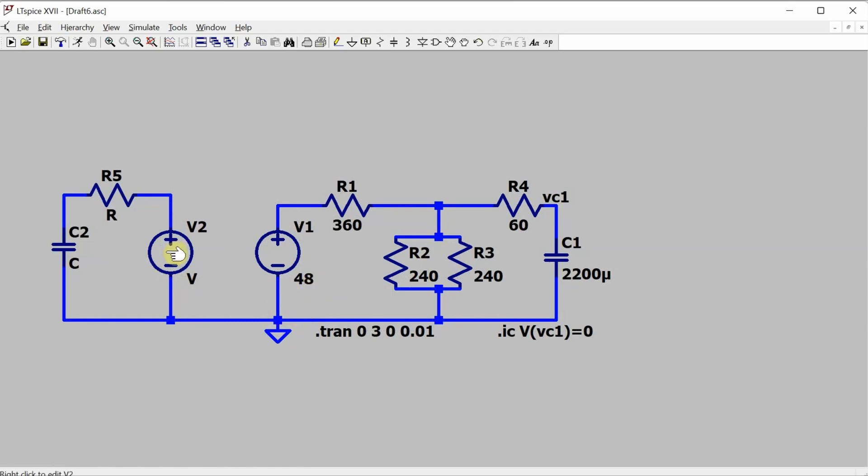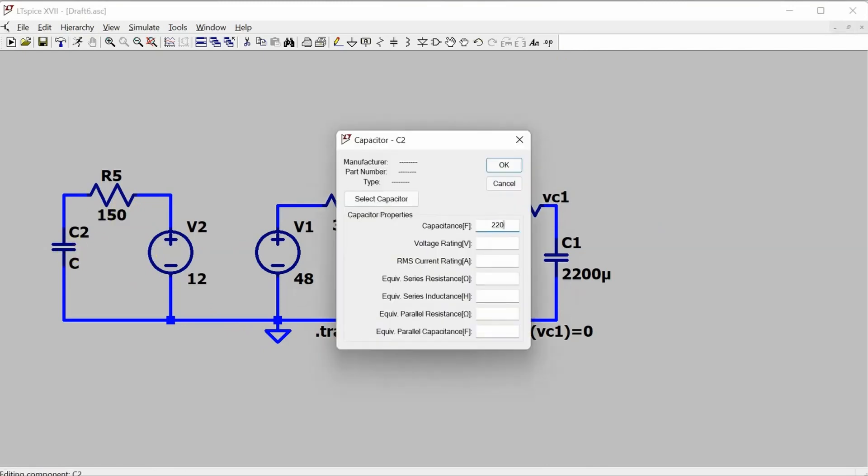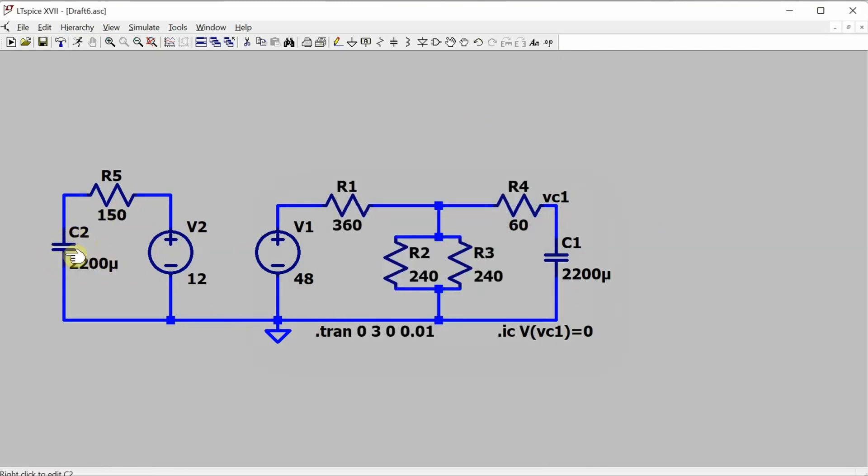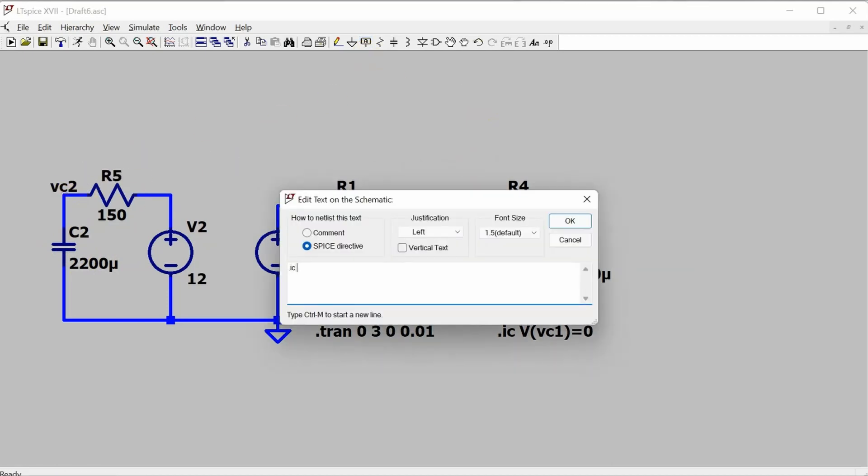And now let's set the values for the components. And I need to make sure that the voltage on this capacitor is zero volts as an initial condition, so I'll put a label on it and then add an initial condition statement.